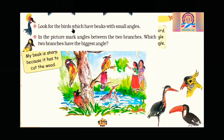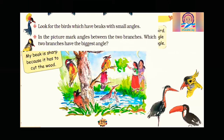Look for birds which have beaks with small angles. So many birds are there and we have to identify the birds with beaks less than 90 degrees. This one is open but still less than 90 degrees. This one is more than 90 degrees. This one is again less than 90 degrees. In this way you can observe the angles.